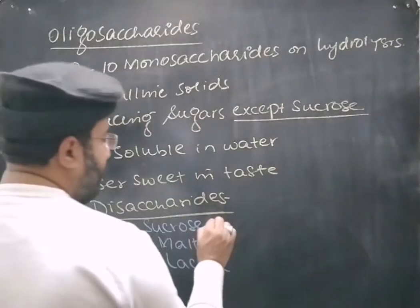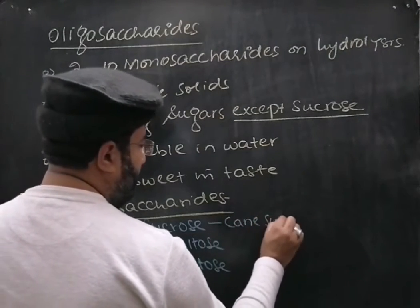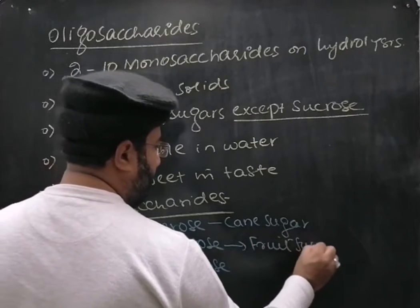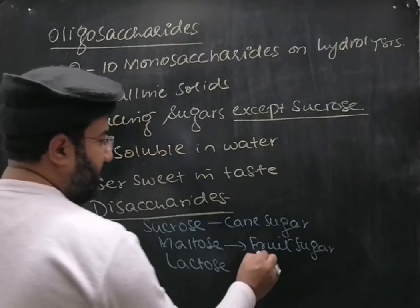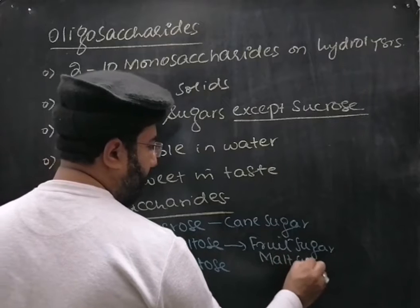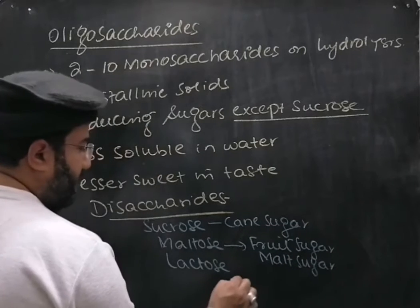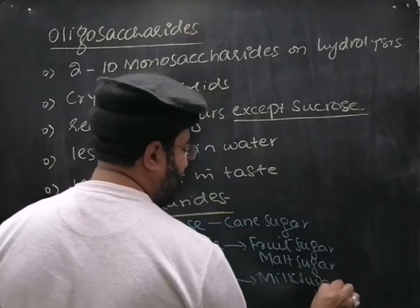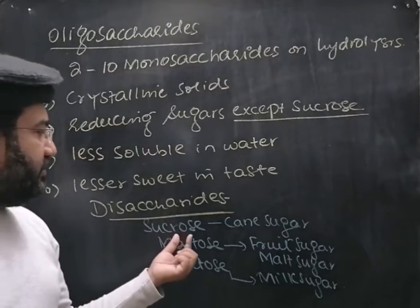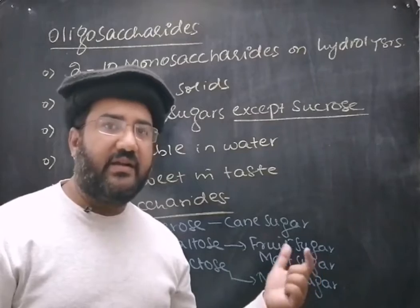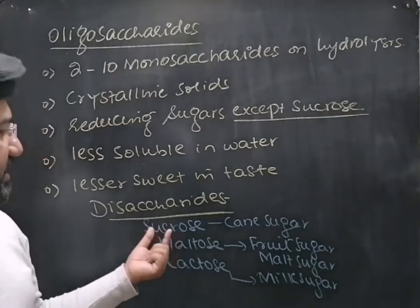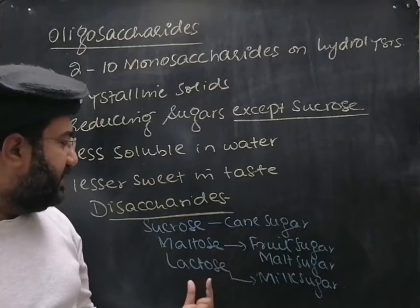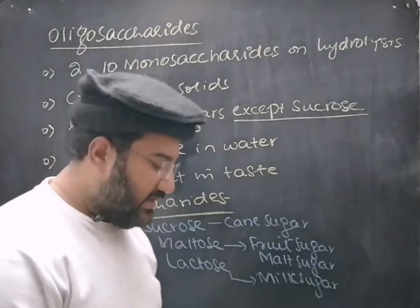Sucrose is also called cane sugar. Maltose is also called malt sugar. And lactose may also be called milk sugar, as it is present in milk. The rich source of sucrose is sugarcane and sugar beet, and it is present in many fruits as well. The source of maltose is basically fruits, and that of lactose is milk.